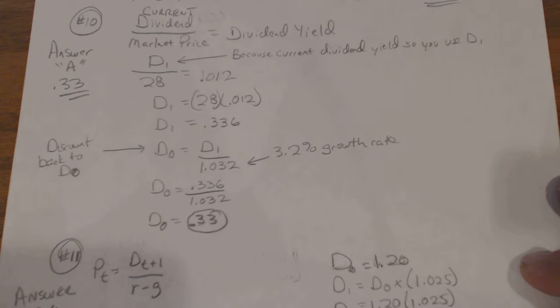They're telling you the current yield is 1.2 percent. Remember dividend yield is the dividend, the current dividend over the price. So the dividend yield is 0.012 and the price is 28, so you just basically figure for D1, which is basically the price times the yield, and that gives you D1 which is 0.336.